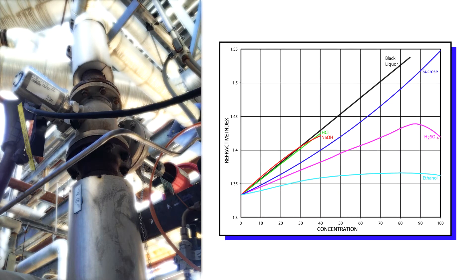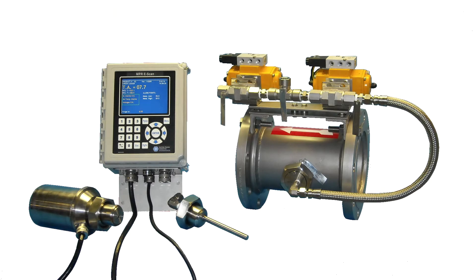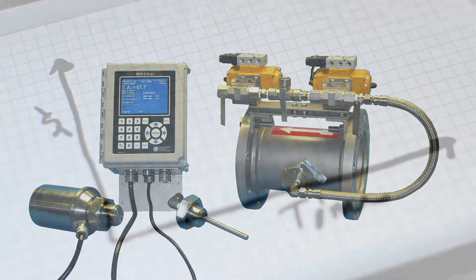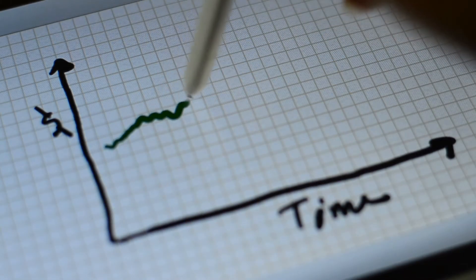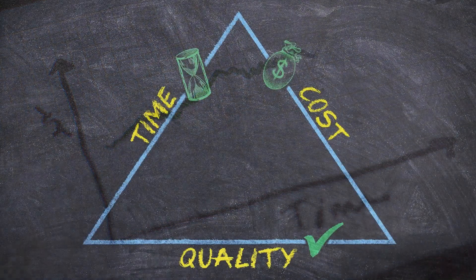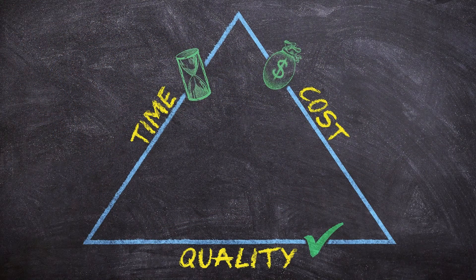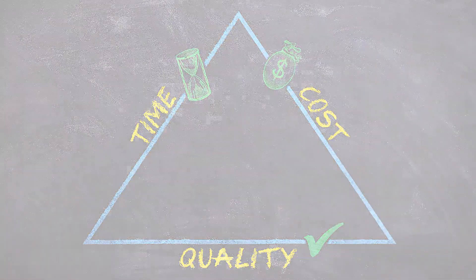Inline process refractometers determine the concentration of liquids by measuring the refractive index continuously and in real time. This determination is independent of color, viscosity, turbidity, or absorption. They provide very reliable and accurate real-time measurement, ideal for process loop optimization and control. Product quality is improved, batch times are better controlled, and the overall result is higher product quality, better process efficiency, and reduced costs.